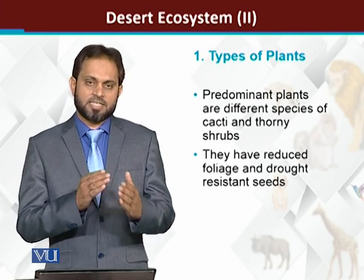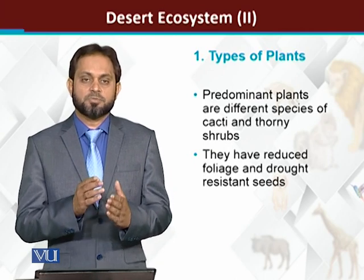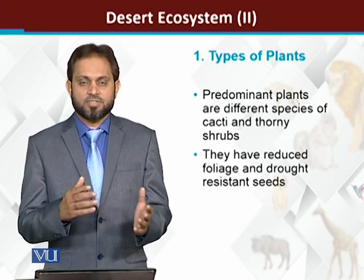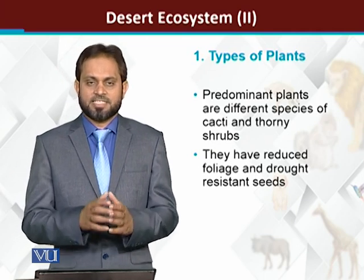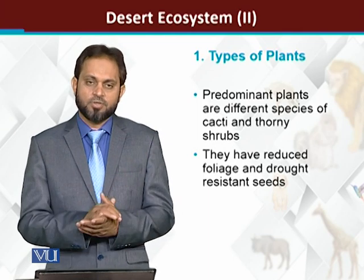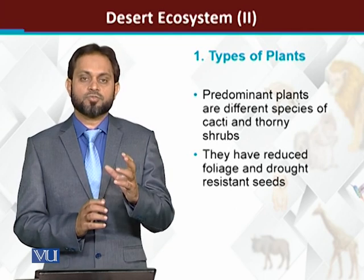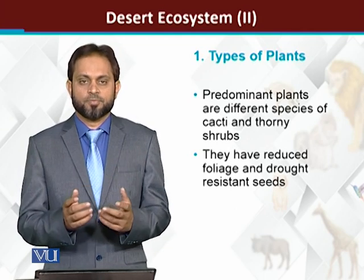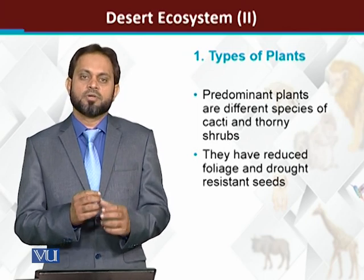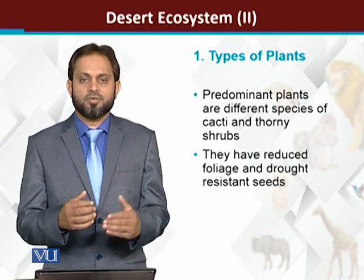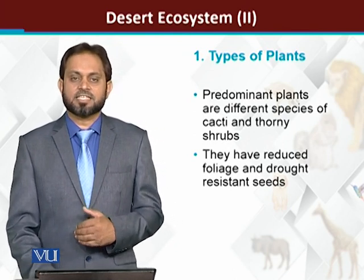Mainly, if we look at deserts, the important plants are the different species of cacti. The other important group are the thorny shrubs. They have drought-resistant seeds, which allow them to prevent or survive drought conditions.